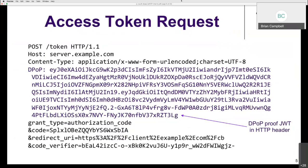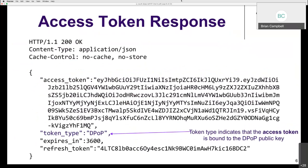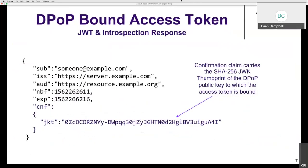This is an example of an authorization code exchange. Assuming all checks out, the access token is issued like normal, but bound to the public key that was in the DPoP header. The token type is used to indicate to the client that this access token is bound to the DPoP public key.